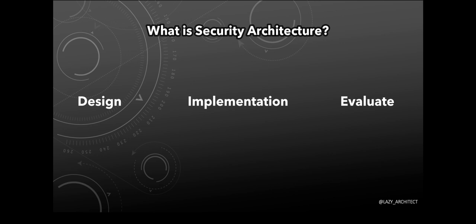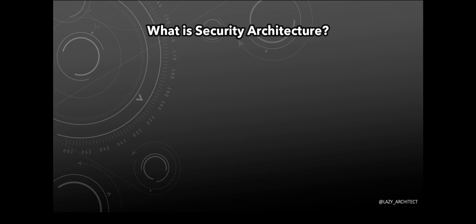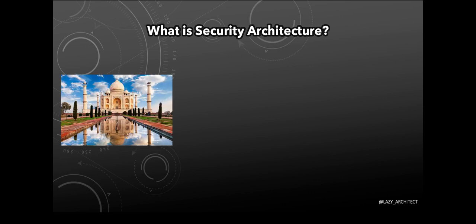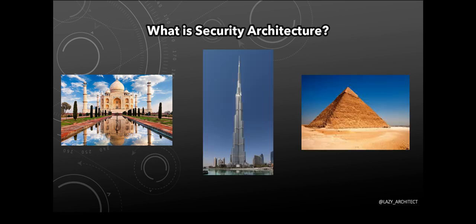So where did it get started? Let's have a look at some of the magnificent creations of mankind, like the Taj Mahal, Burj Khalifa, and the Pyramids. They are all engineering and architecture marvels. Since they have been created, they have sustained many natural calamities. Do you really think they could have managed to survive if they had a flawed architecture? Exactly — I don't think so either.